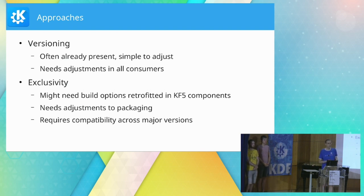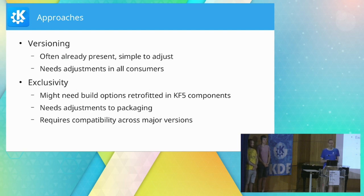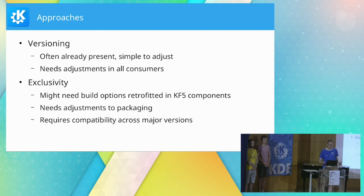We typically have three different standard approaches. The most common is versioning: you increment the version number and things can happily live side by side. That's easy on the library side but requires adjustments to all consumers. For libraries, CMake checks this for us, though it's a bit more difficult to spot right now while there's still a lot of KF5 infrastructure around — if you're still using the wrong KF5 name, you might not notice.